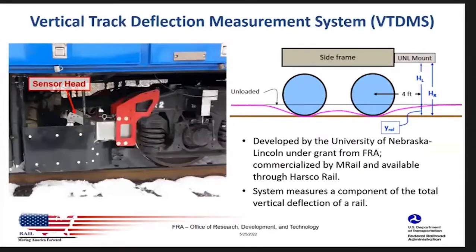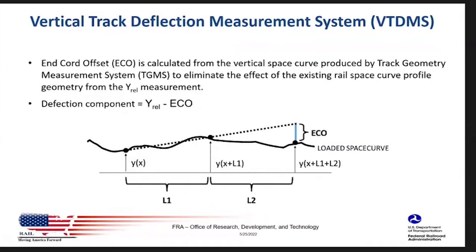The vertical deflection system was developed by the University of Nebraska Lincoln under a grant from FRA and was commercialized by Emerald and Harsco. What this system does is measure a component of the total vertical deflection — basically the slope of the deflection basin over four feet. That measurement includes a component of unloaded geometry, but that component can be eliminated when installed on the car using track geometry. We can calculate an inertial offset from the geometry system to basically remove the geometry component and isolate the deflection itself.